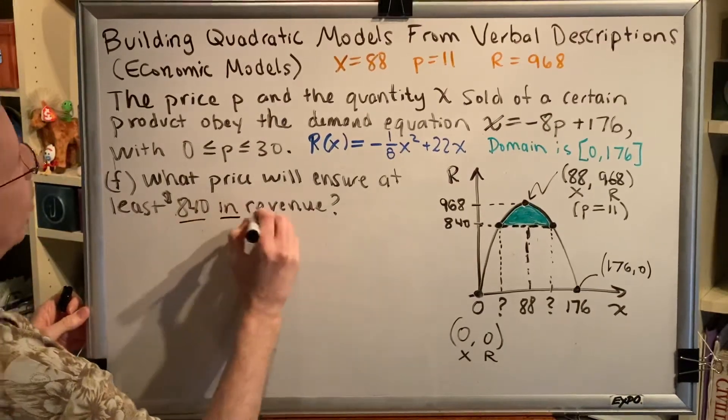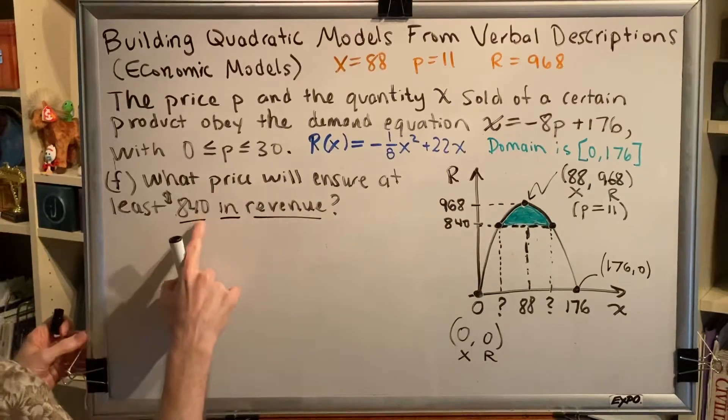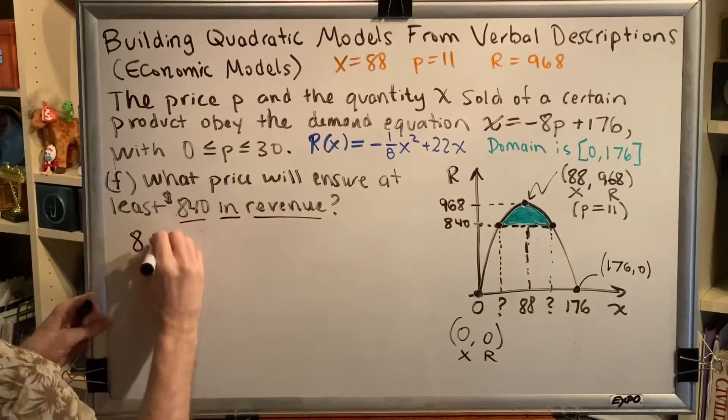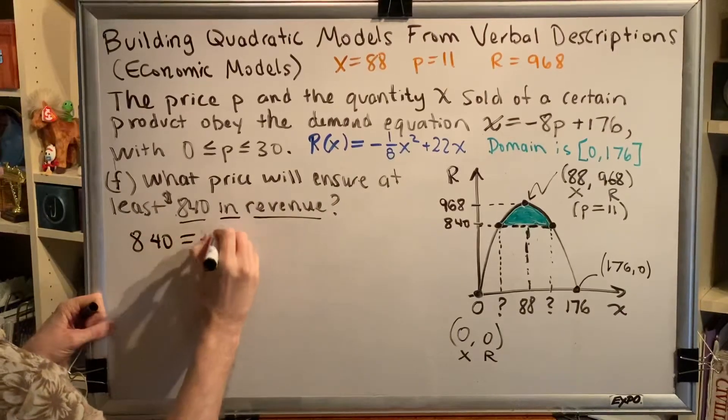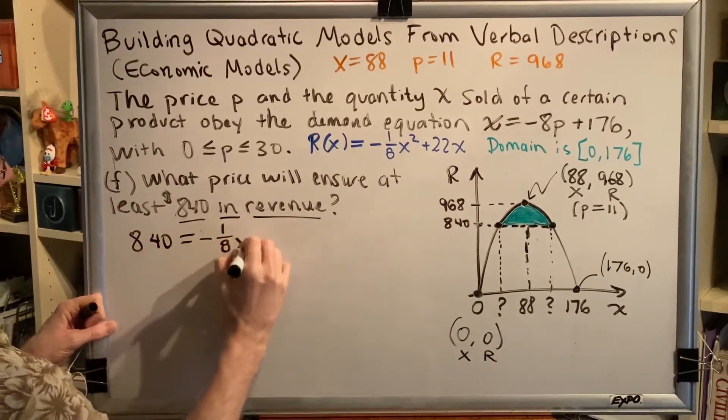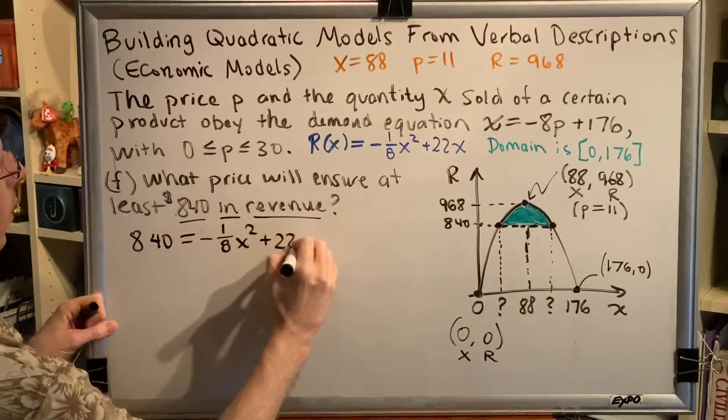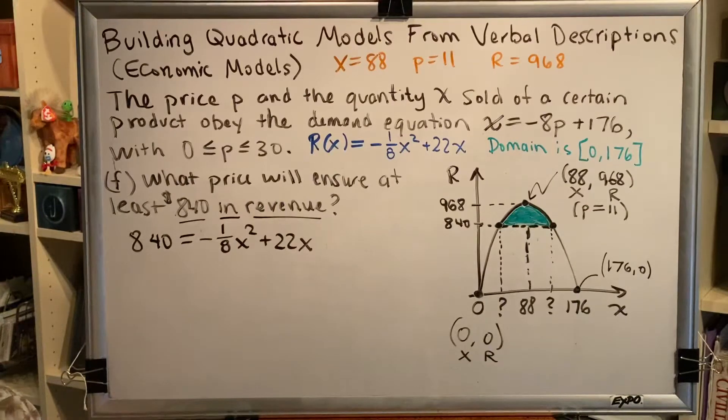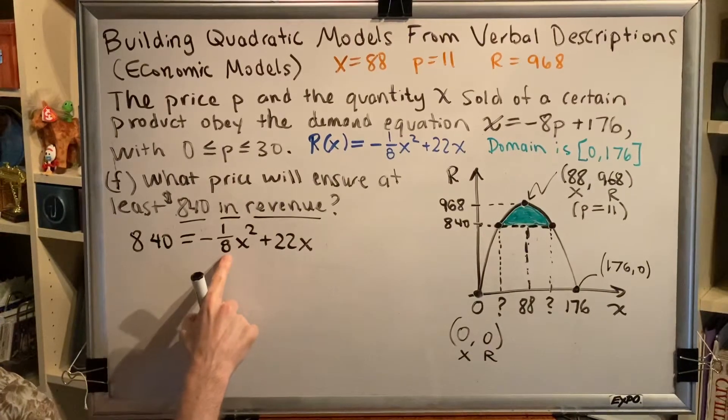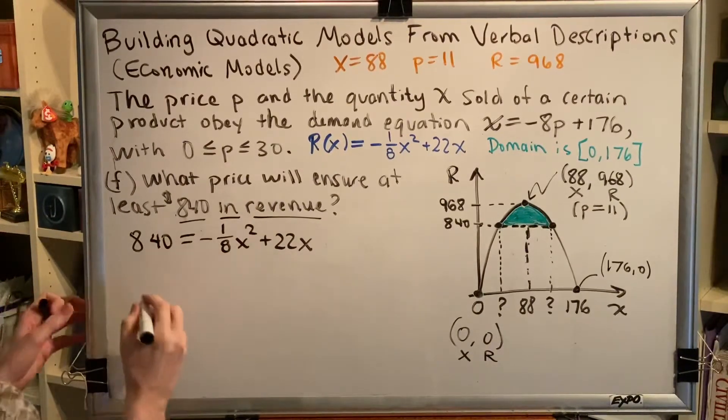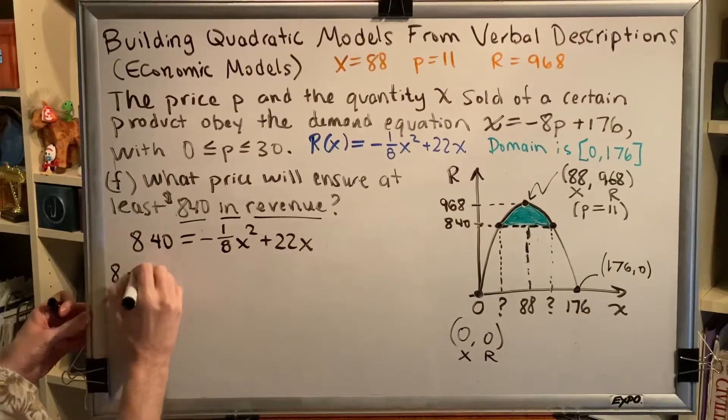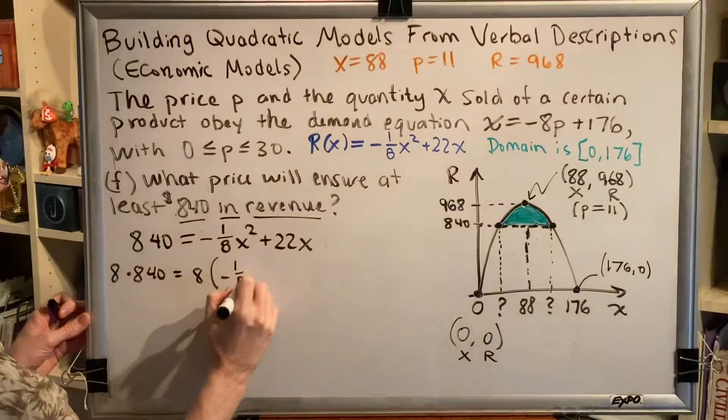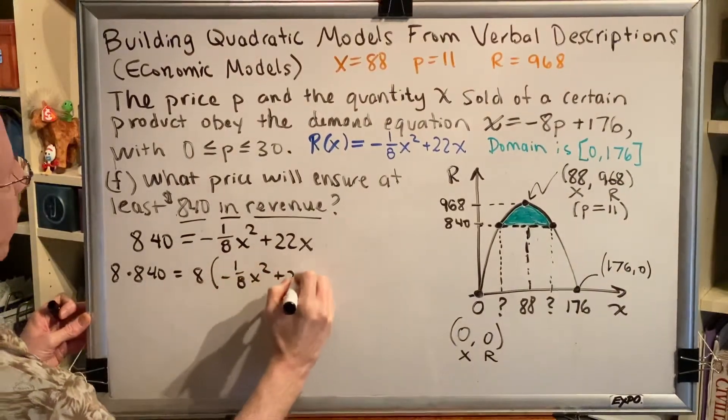What price will ensure at least $840 in revenue? $840 in revenue. That's telling me that $840 is the value for r. So I'll plug that into my equation, and I'll get 840 = -1/8x² + 22x. Now I need to solve this equation for x. The first thing I'm going to do is try to get rid of this fraction by multiplying both sides by 8.